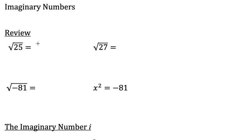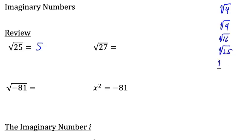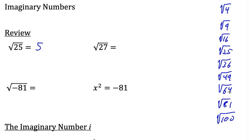So the square root of 25 equals 5. We can also simplify or break down square roots that are not perfect square roots by looking for perfect square roots that are factors of that number. Let's take a moment to review our perfect square roots. We have the square root of 4, square root of 9, square root of 16, square root of 25, square root of 36, square root of 49, square root of 64, square root of 81, and the square root of 100, and so on. These are perfect square roots.